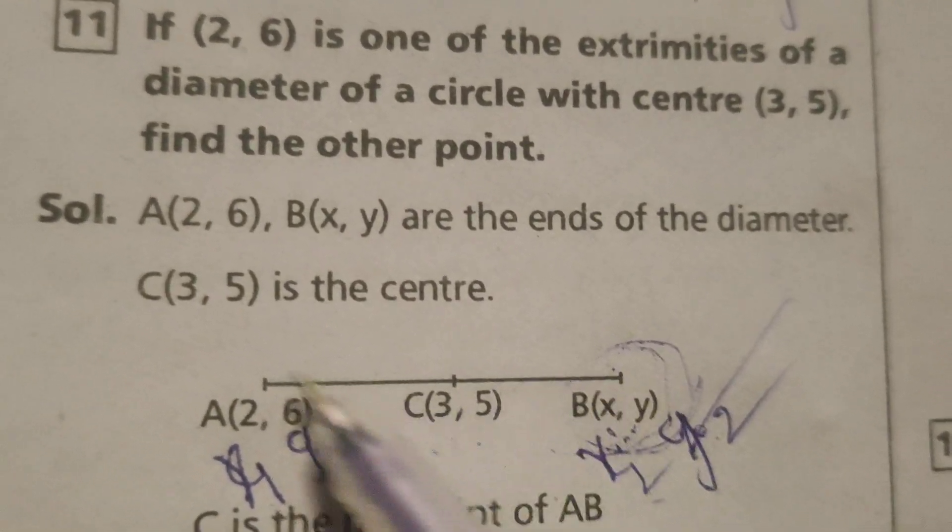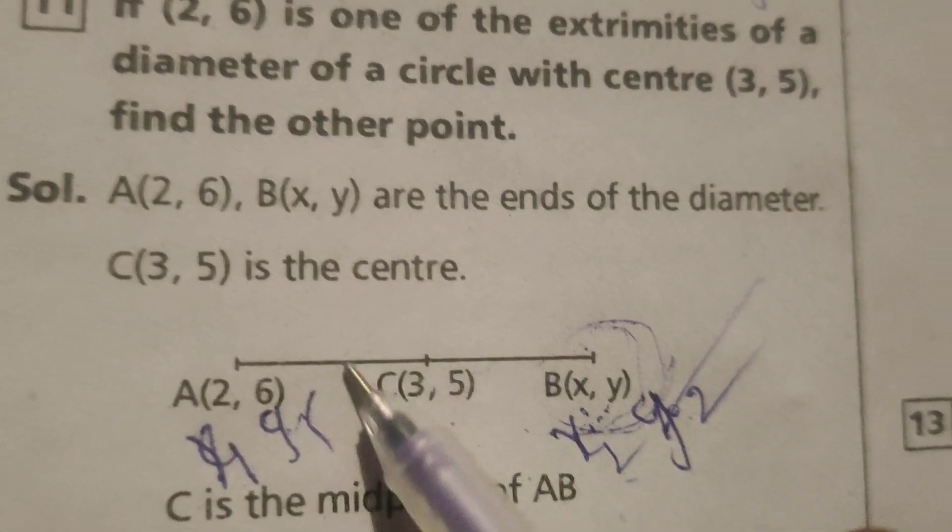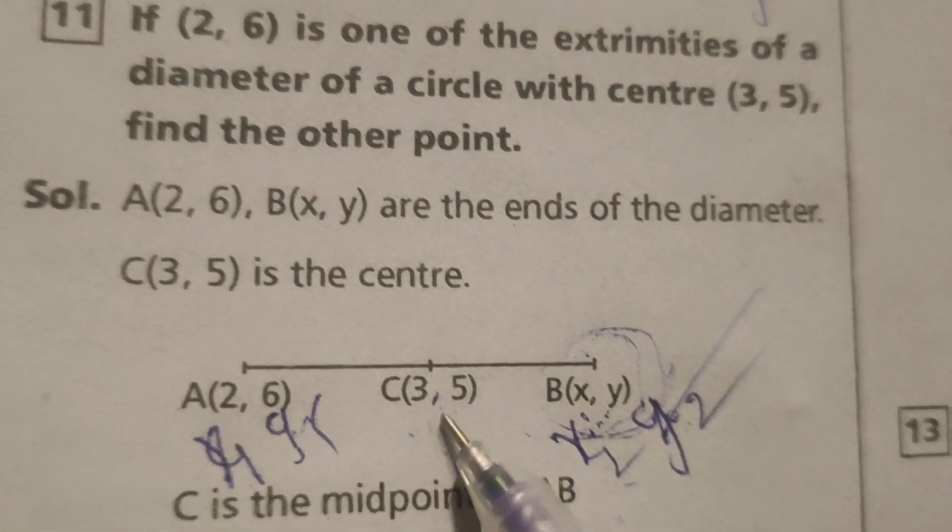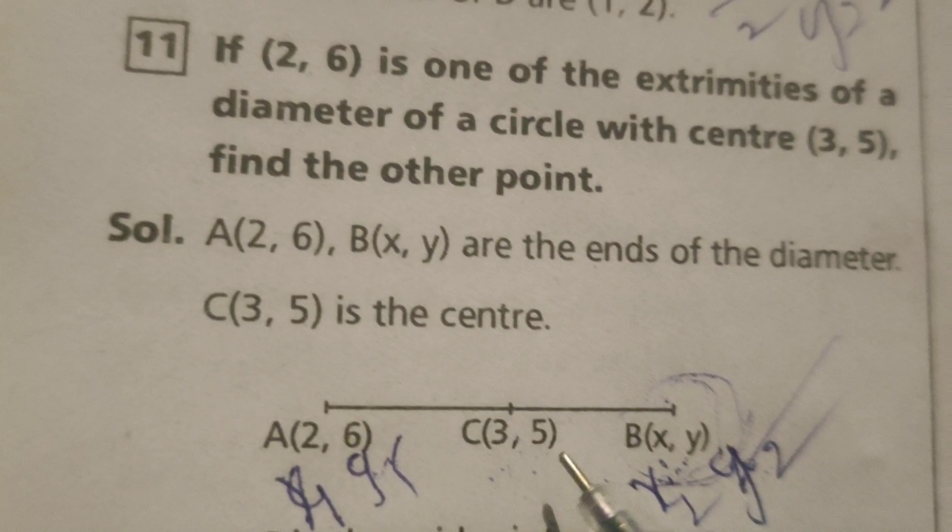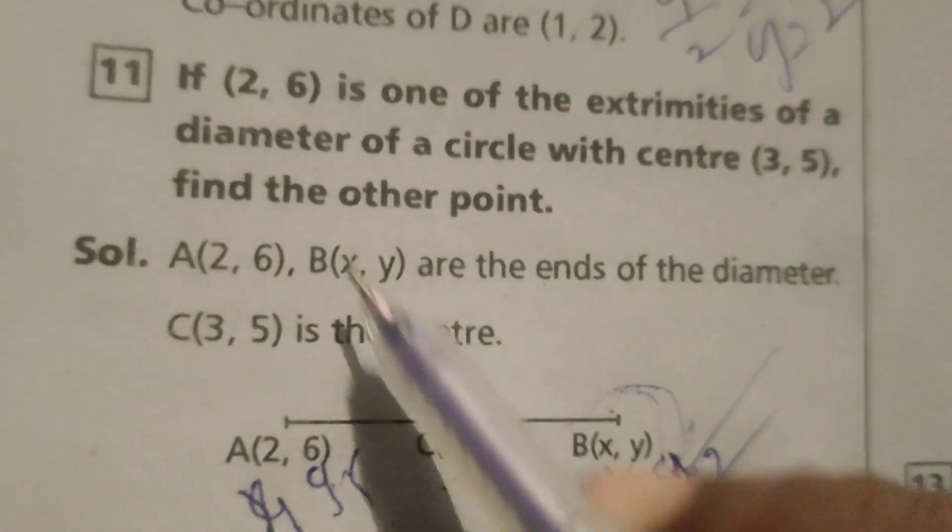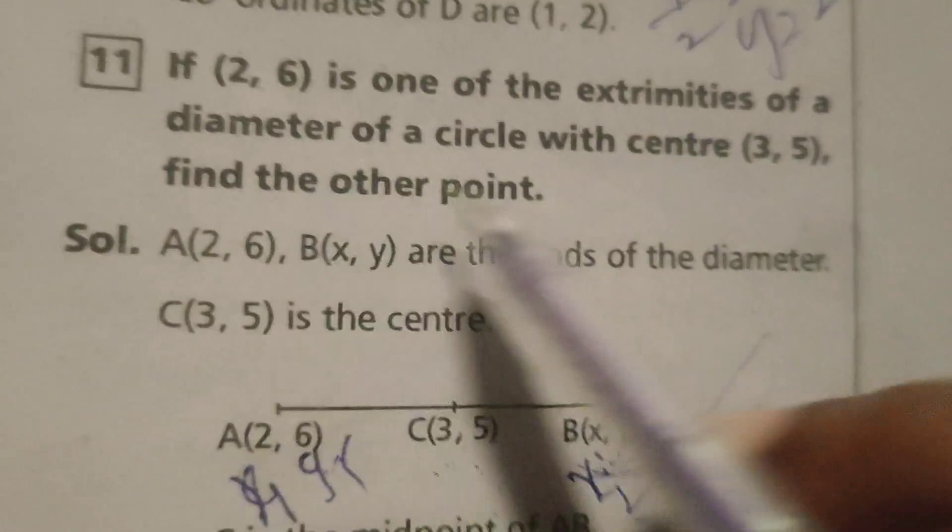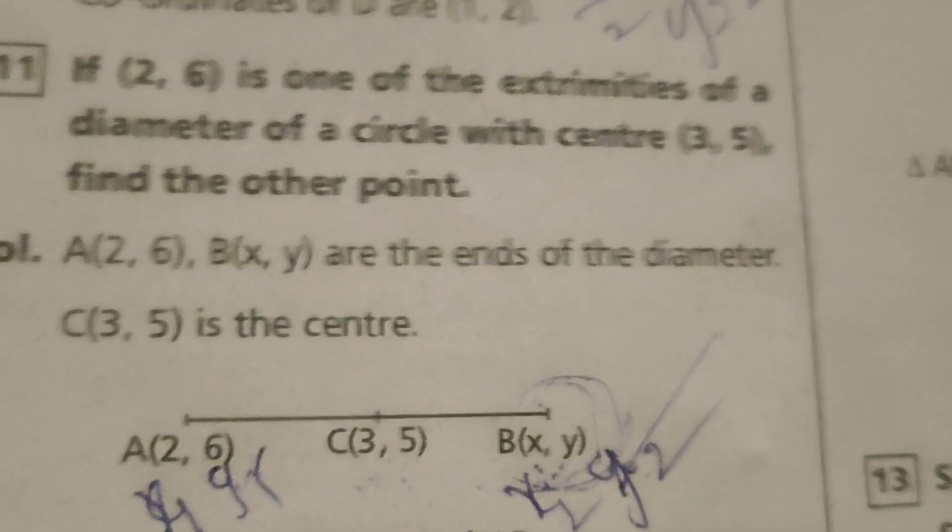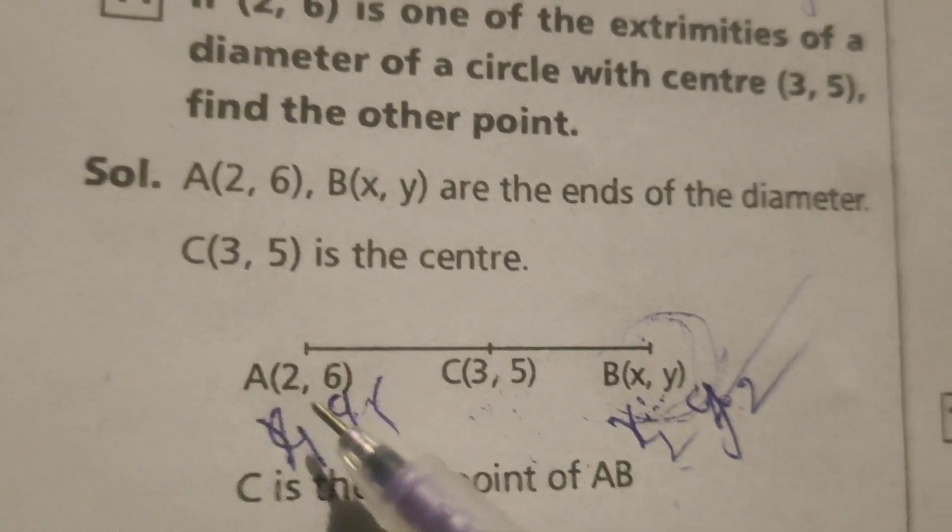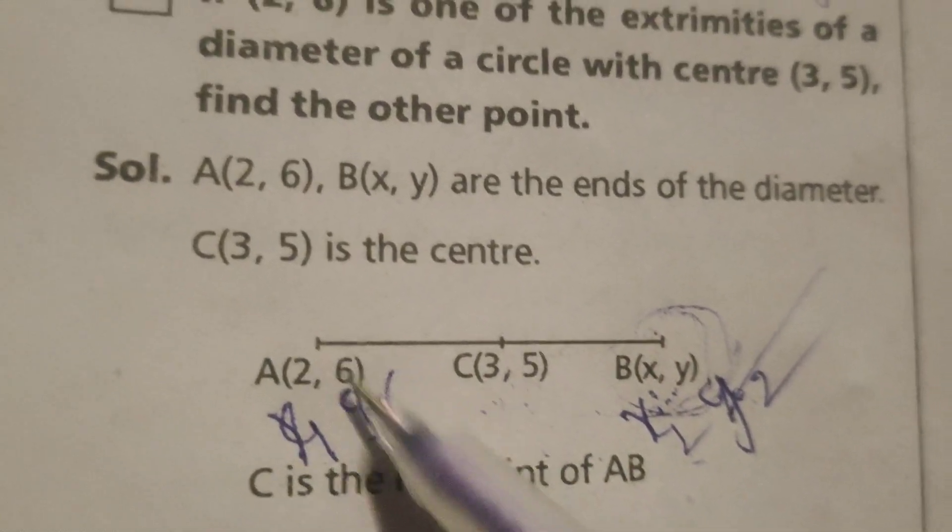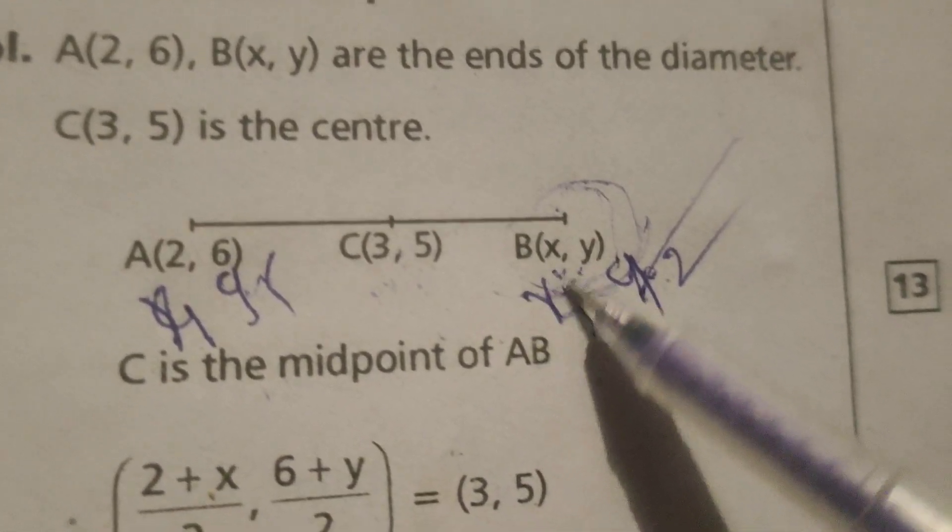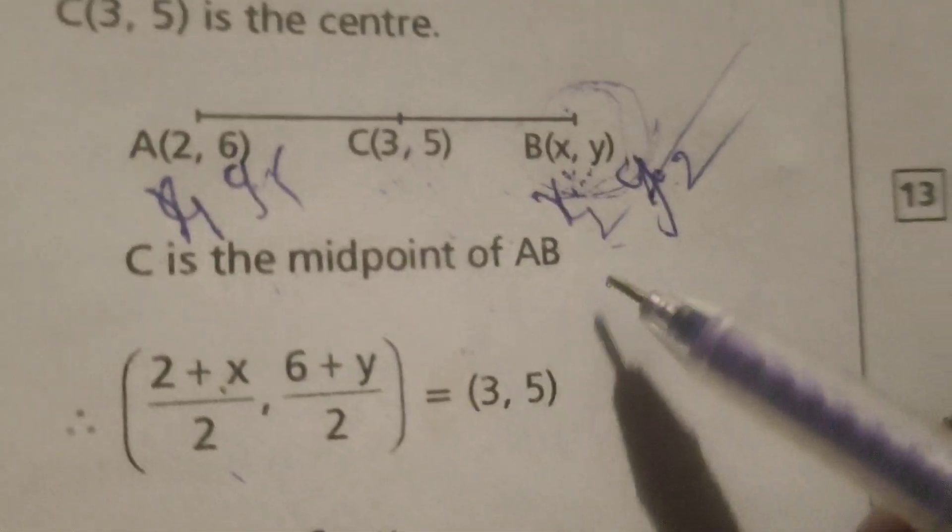This is the diameter of the circle. Let us consider the given midpoint C(3,5) as the center. Consider a point, one extreme or one end of the diameter, A(2,6). Now find out the other end of the diameter, that is B(x,y). C is the midpoint of AB.